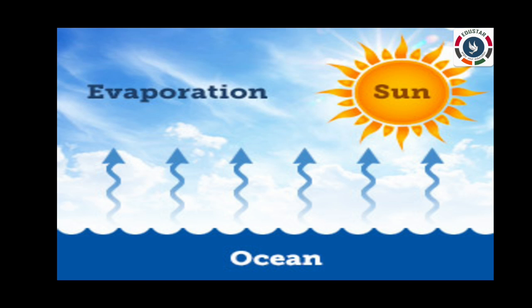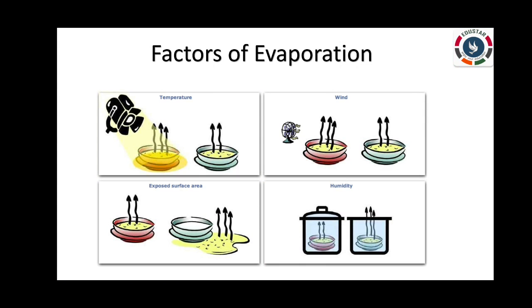First one is evaporation. The process in which water changes into water vapour on heating is called evaporation. We have learnt that water is also present in the atmosphere in the form of water vapour. The amount of water vapour present in the atmosphere is known as humidity. When the weather is very hot, more water gets evaporated which makes the weather humid. The rate of evaporation depends on the following factors: wind speed, heat, surface area and humidity.